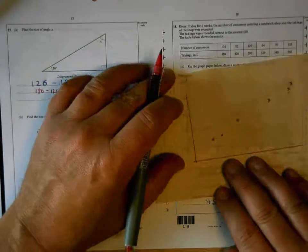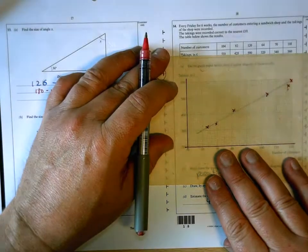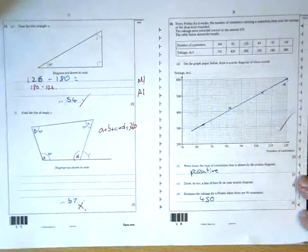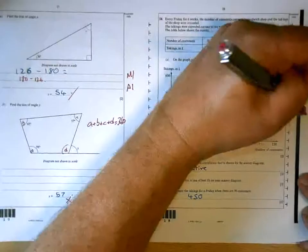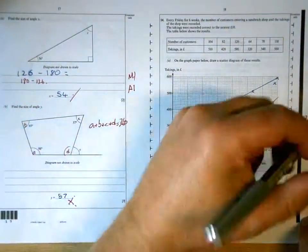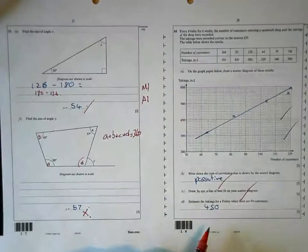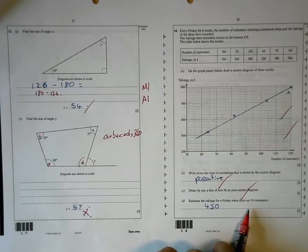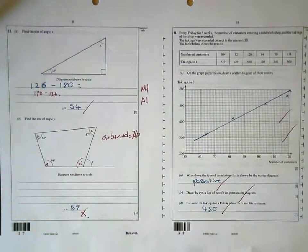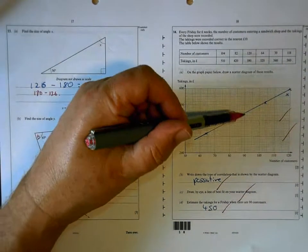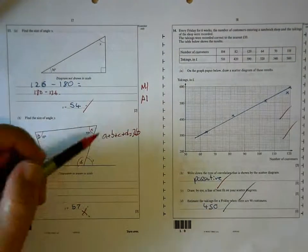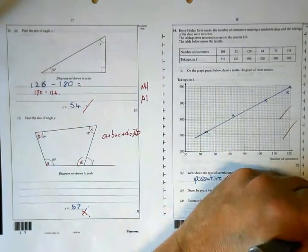Question 14 is a scatter graph, so let's see how you've got on here. That's perfect. So all your plots, all your points are plotted in the right place, and your line of best fit is good as well. It is positive correlation. You've done that. And you've estimated on a Friday there are 90 customers, 450 pounds, which is good. What I would suggest is that you mark that on the graph so the examiner can see where you're reading from. So total for the page, 2, 4, 6, 7.